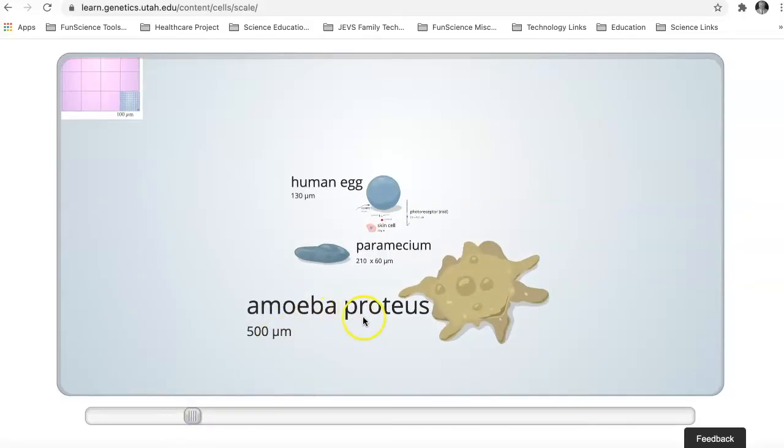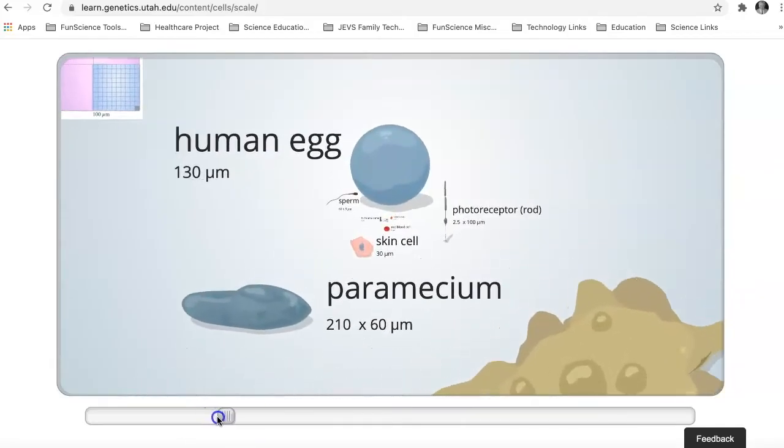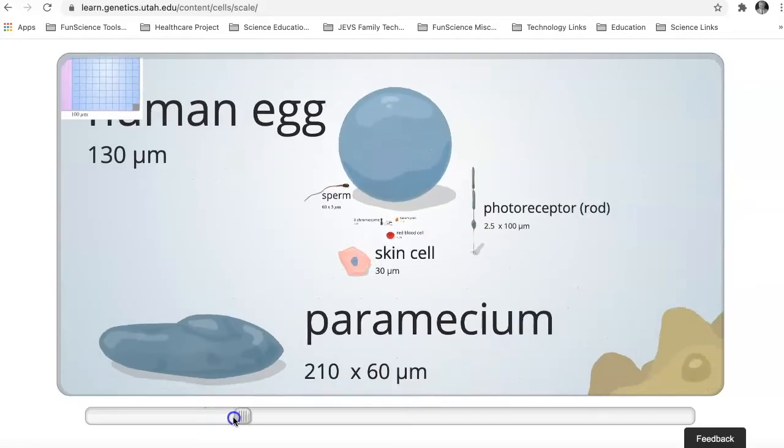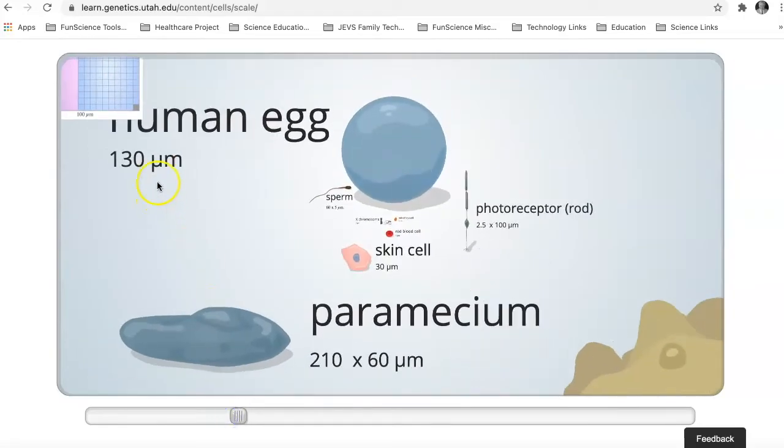Here's an amoeba proteus, which is a large one-celled organism, which is about 500 micrometers or about a half of a millimeter. And we keep going down, down, down. There's a human egg at 130 microns. There's a human sperm, much smaller.